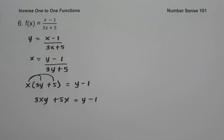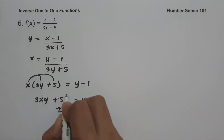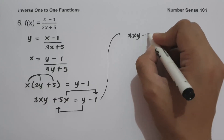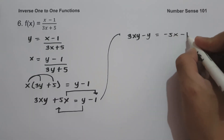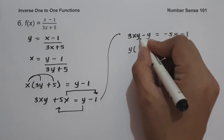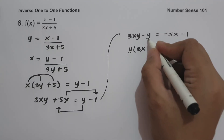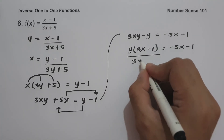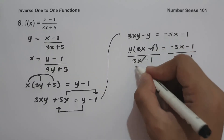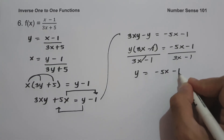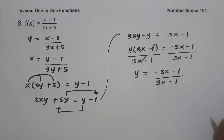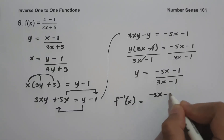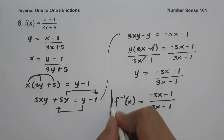Since we are solving for y in terms of x, move y to the other side and move 5x to the side of y - 1, giving 3xy - y = -5x - 1. Factor: y(3x - 1) = -5x - 1. Divide both sides by (3x - 1) and cancel. So y = (-5x - 1)/(3x - 1). The inverse of f(x) = (x - 1)/(3x + 5) is f⁻¹(x) = (-5x - 1)/(3x - 1), and this will be our answer.